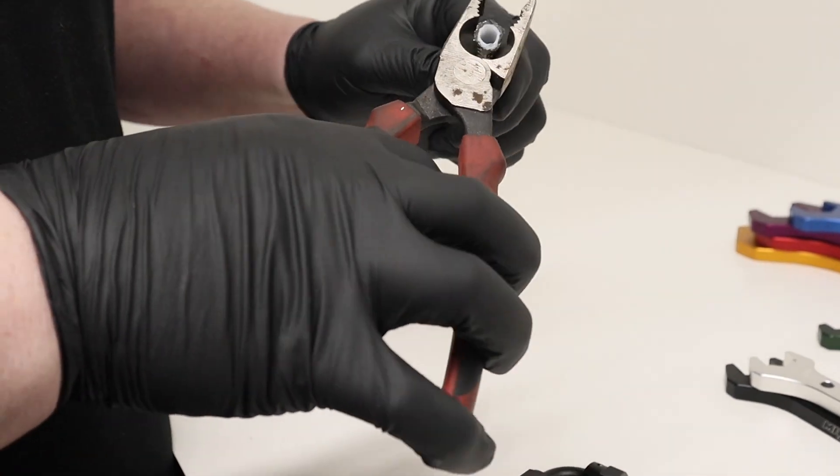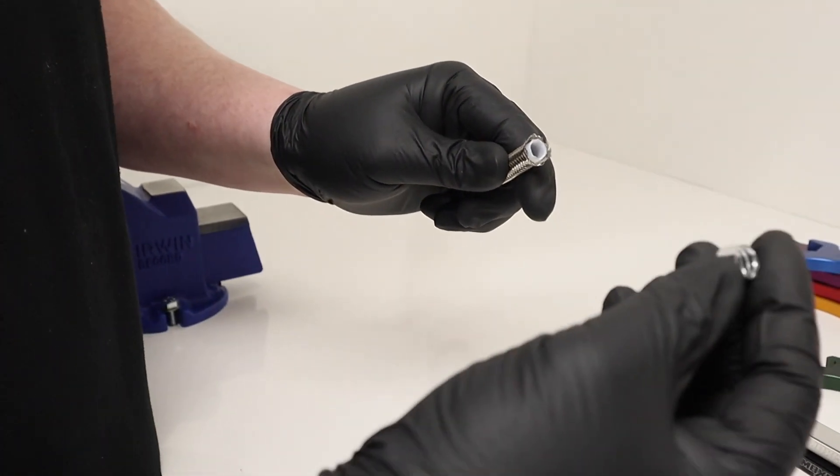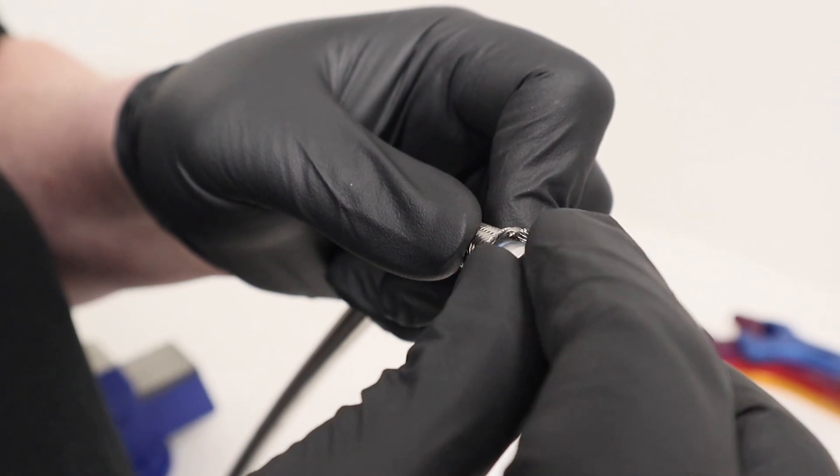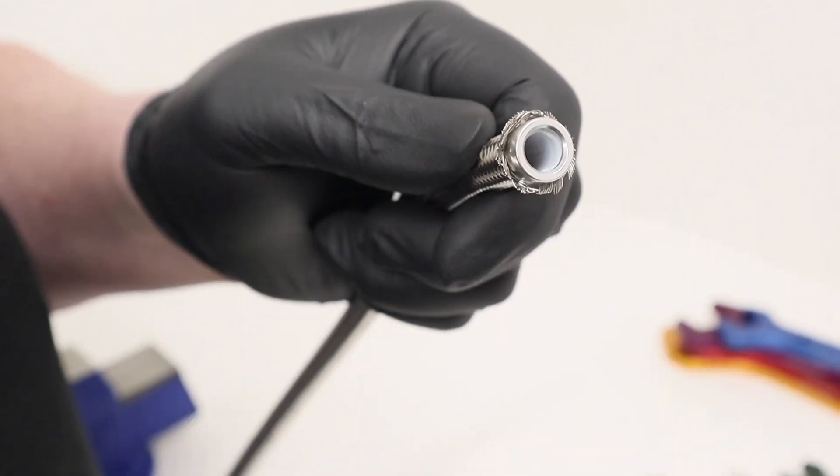Slightly fray the braid out. Now, putting on the olive, we want to be careful that we don't nick the end of the PTFE hose. It should slide on nice and easy by hand.